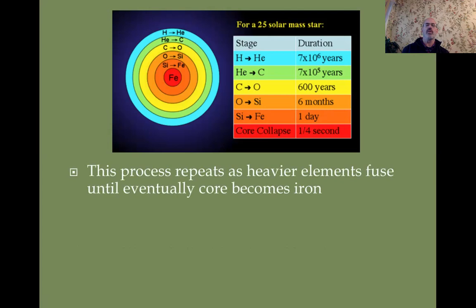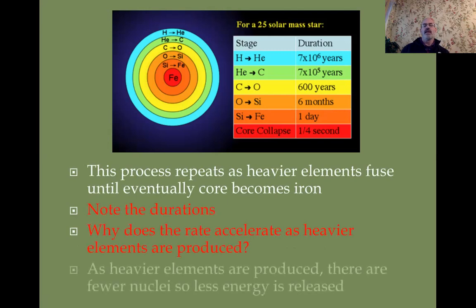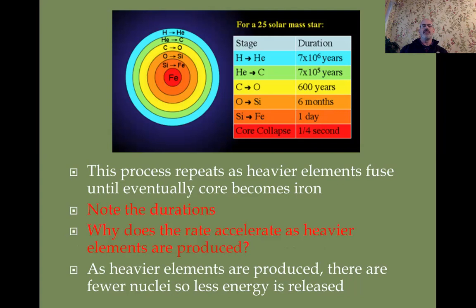Why does the rate of fusion accelerate as heavier elements are produced? As heavier elements form, there are fewer nuclei to fuse. If you have a certain amount of matter as hydrogen, you have many nuclei, but if it's all iron you have far fewer. That means less energy is released per cycle, allowing the core to contract more, get hotter, and burn through the fuel much faster.